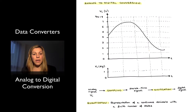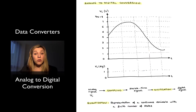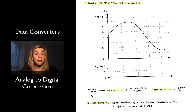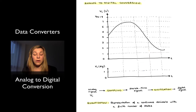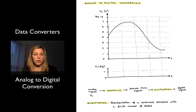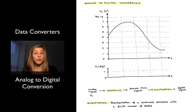Let's take a closer look at the analog-to-digital conversion process. I have represented an analog signal, which is continuous in time and continuous in amplitude. Continuous in time simply means that there is a value of the signal for every single point in time, and continuous in amplitude means that there are no abrupt changes in the value of the signal — the transition from one value to another is a smooth curve.